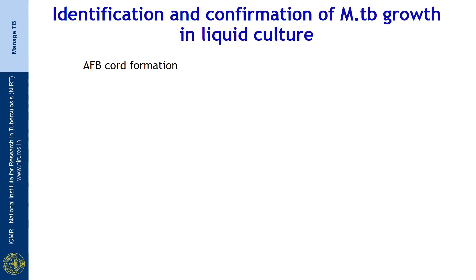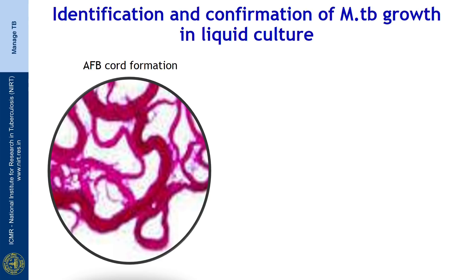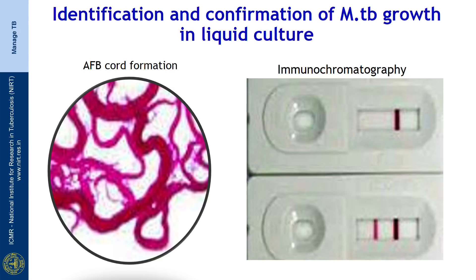How is confirmation of MTB growth in liquid culture done? First, a smear from the culture is taken, stained by the Ziehl-Neelsen method, and examined for characteristic cord formation; when cord formation is seen, the growth is suspected to be MTB. Second is the immunochromatography test, which makes use of gold-coated antibodies against the MPT64 antigen of MTB. When the culture is added to the device, capillary action allows the antigen to flow through and contact the gold-coated antibody, resulting in a pink complex. The device has an inherent positive control, and the control must be positive for the test to be declared valid. Both tests are positive for Mycobacterium tuberculosis complex.